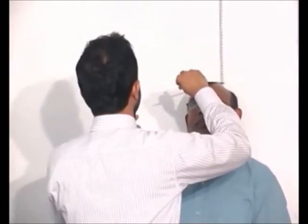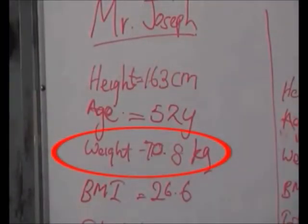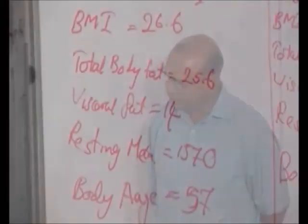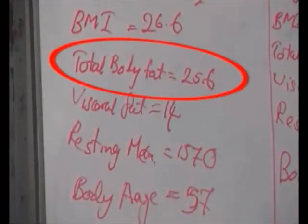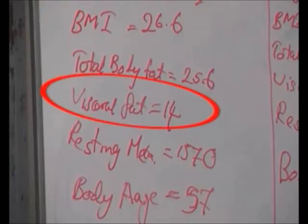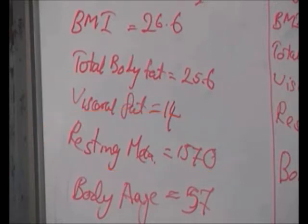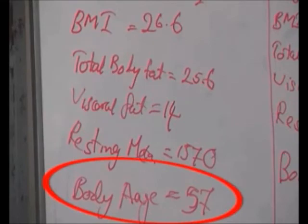Now I would like to call two volunteers to come and get their body composition measured. The first volunteer's height is 163 cm; I am setting his gender as male and his age as 52. His weight is 70.8 kg, total body fat is 25.6%, and his BMI is 26.6. His visceral fat is 14, his resting metabolic rate is 1,570, and his body age shows 57.